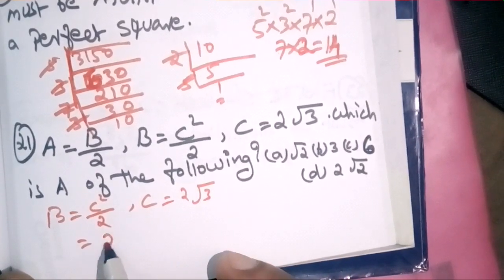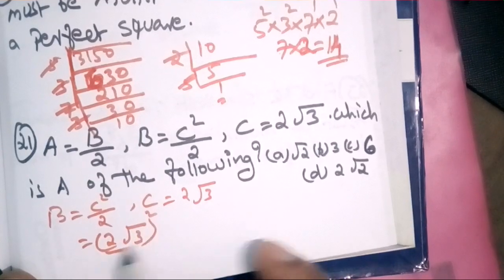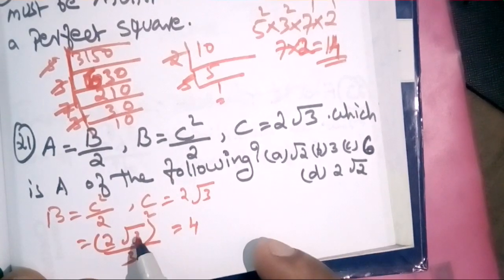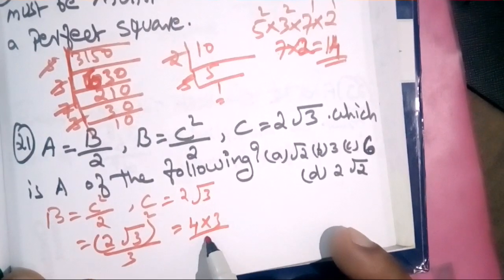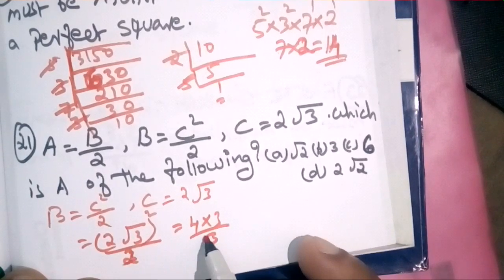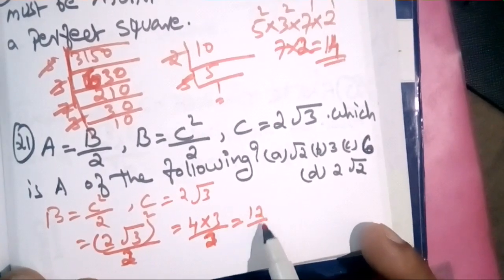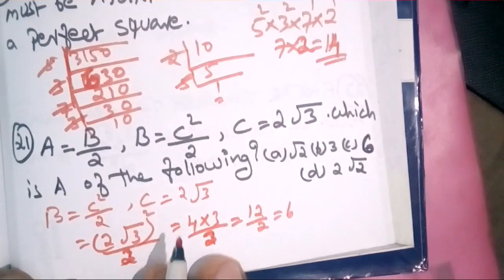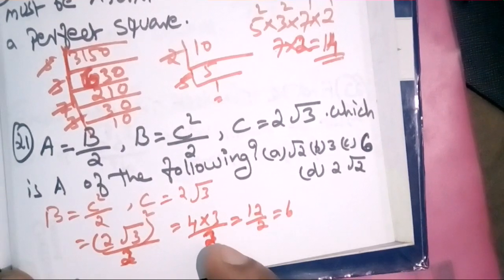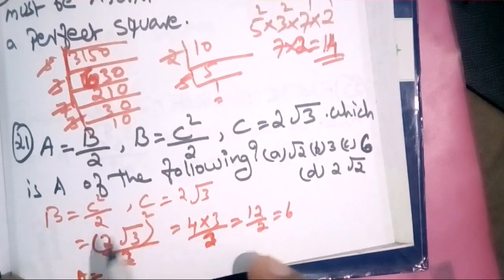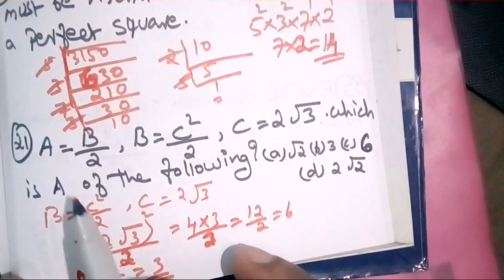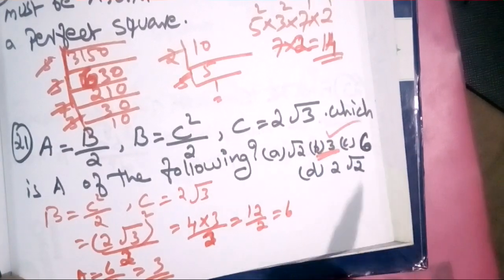C squared divided by 2 equals 2 root 3 times root 3, which is root 2 times root 3 times root 2, giving 3 squared divided by 3, which is 2. That means 12 divided by 2 equals 6. So B equals 6. A equals B divided by 2, which is 6 divided by 2. That means A equals 3.